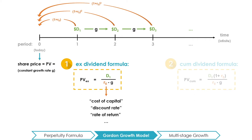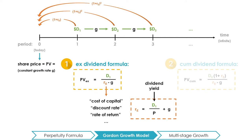This becomes clear when the ex-dividend formula is rearranged to isolate RE, and we can see that RE is equal to D1 over P plus G, where D1 over P represents the dividend yield — the return on investment the investor can expect to earn from buying the stock today at price P — and G is the constant future growth rate of the dividends. In short, RE, the cost of capital, is also the expected rate of return on stocks, because RE reflects the two ways in which a stockholder can earn returns on investing in stocks.